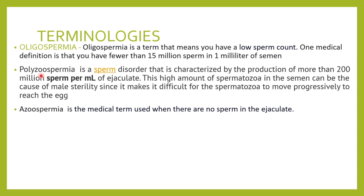Azoospermia is when there are no sperms in the ejaculate. To summarize the terminologies: oligospermia — sperm count less than 15 million per ml; polyzoospermia — sperm count more than 200 million per ml; azoospermia — no sperms in the ejaculate.